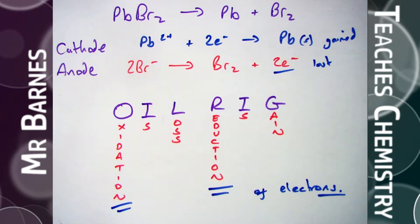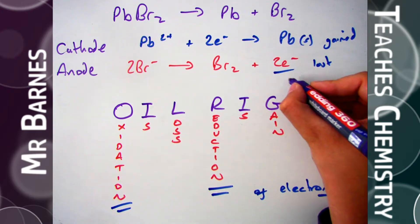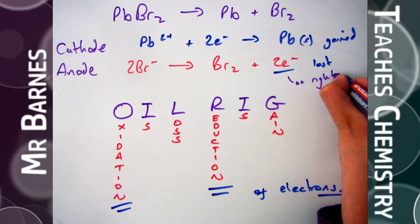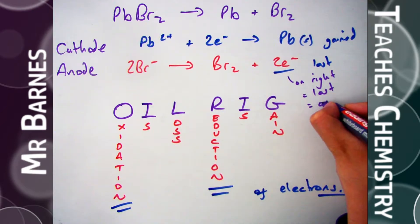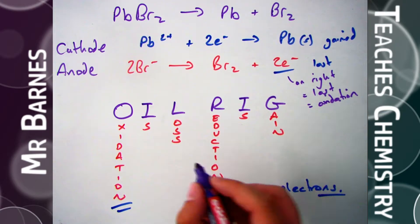So as you can see, at the cathode we've got lead two plus. It has gained electrons, therefore reduction is gain, it has been reduced. At the anode, it has lost electrons, it's on the right hand side, therefore oxidation is loss.